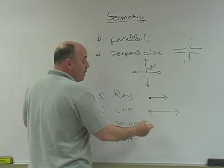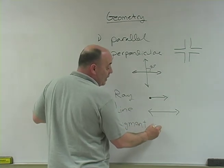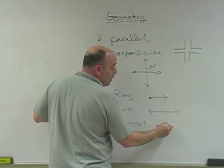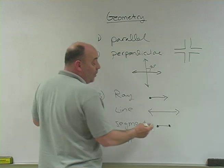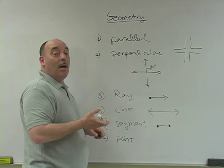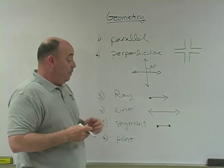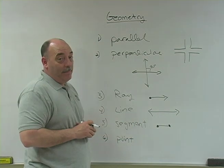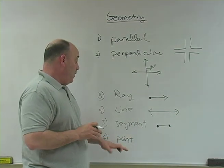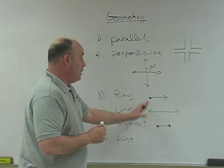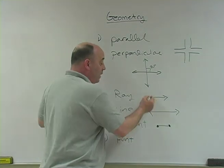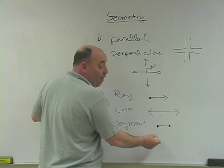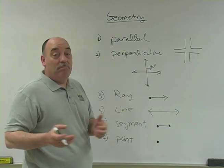A segment is just that — it's a part of a line. It's two points connected by a line to the second point. Finally, a point is simply what you've seen: it's a dot.